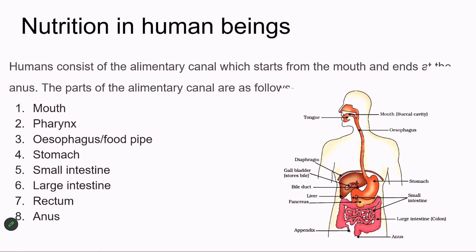Food travels from the buccal cavity to the esophagus, then to the stomach, then to the small intestine, the large intestine, and is finally excreted through the anus. Additionally, glands are present in the digestive tract: the salivary gland in the mouth, and the liver, gallbladder, bile duct, and pancreas — all of which secrete different juices and enzymes to help in proper digestion.